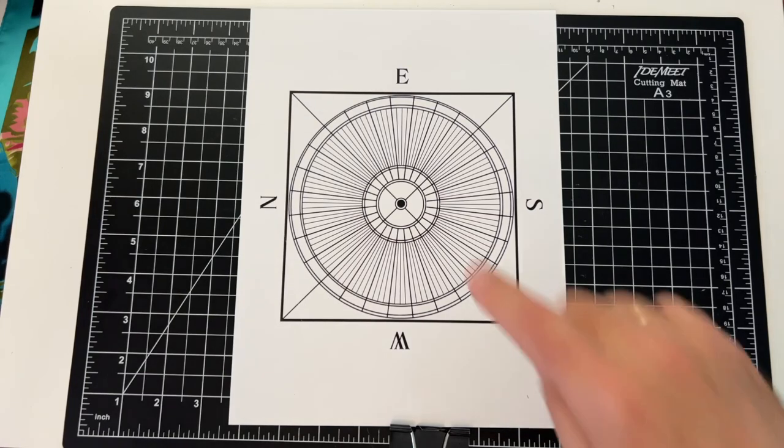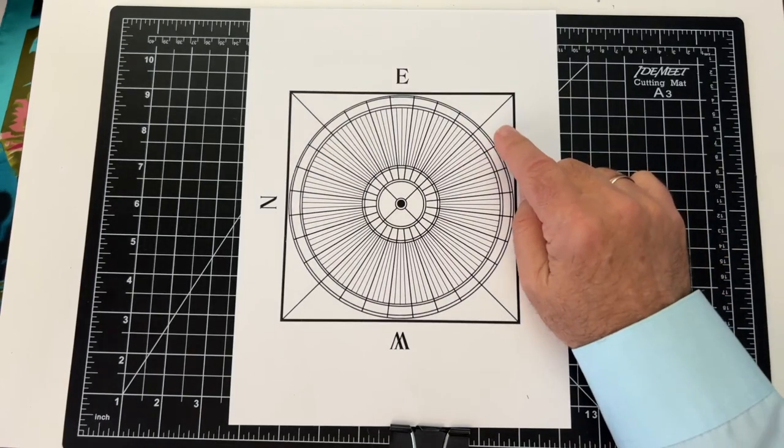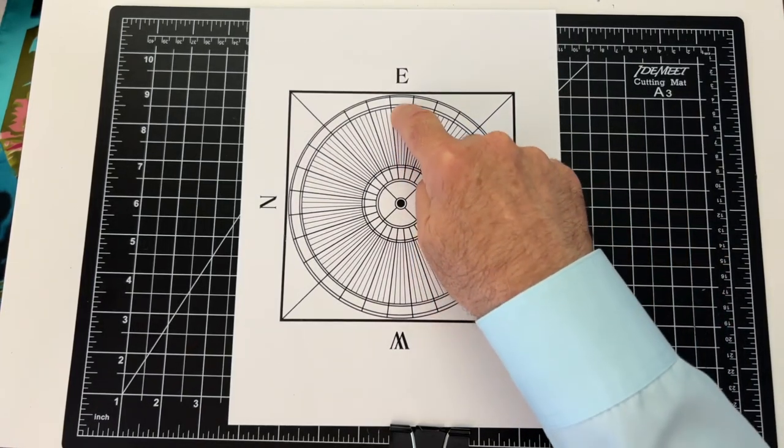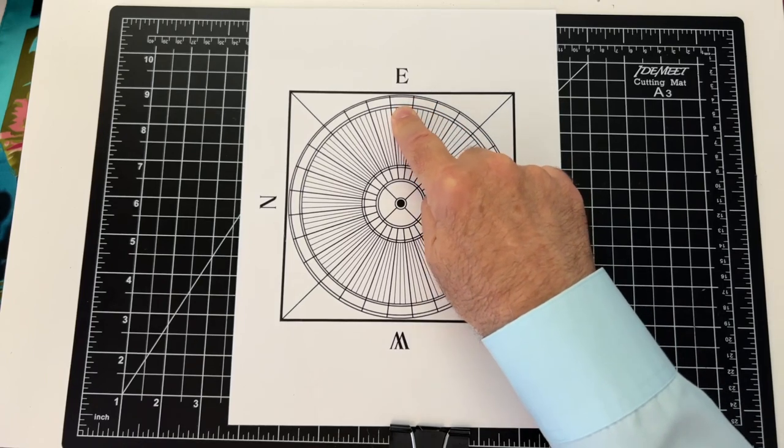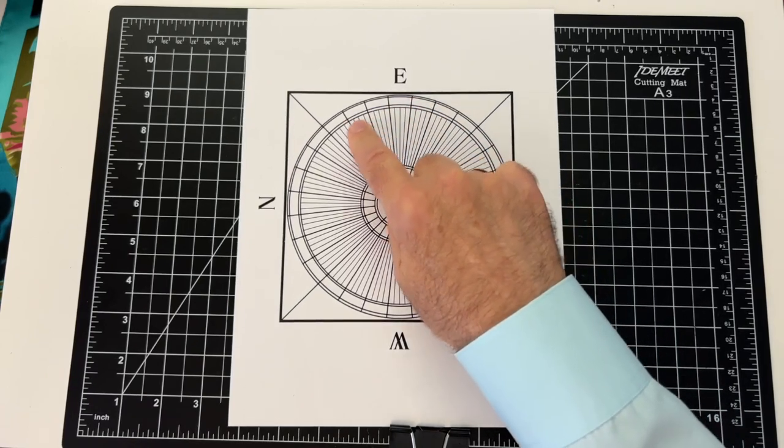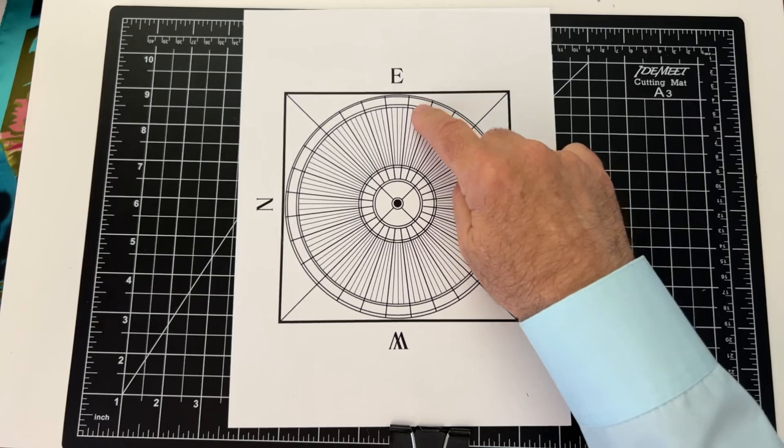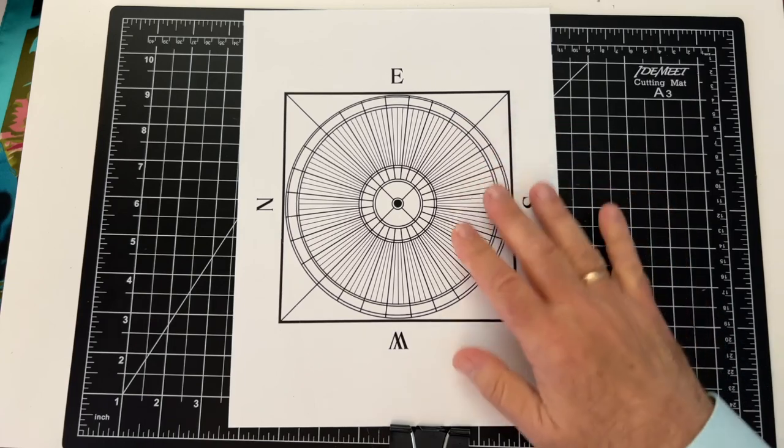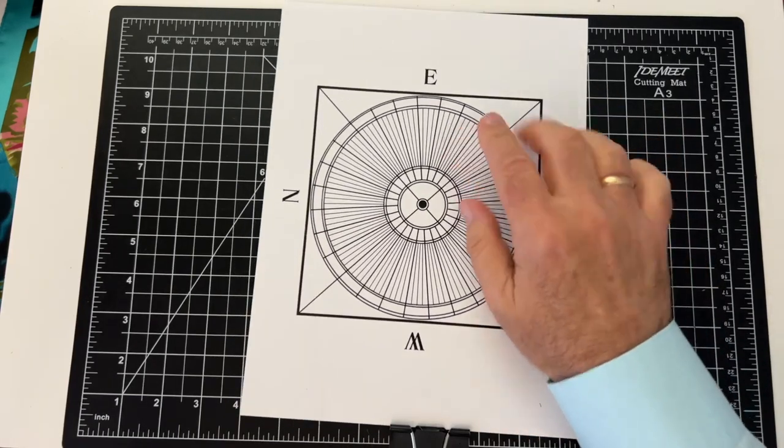To start with the eastern part of the circle, this center section represents what it calls the princes. And each of the sections on either side represent the nobles that work under him. Within each of these, there are four sub-angels that are helping each of the princes and the nobles.